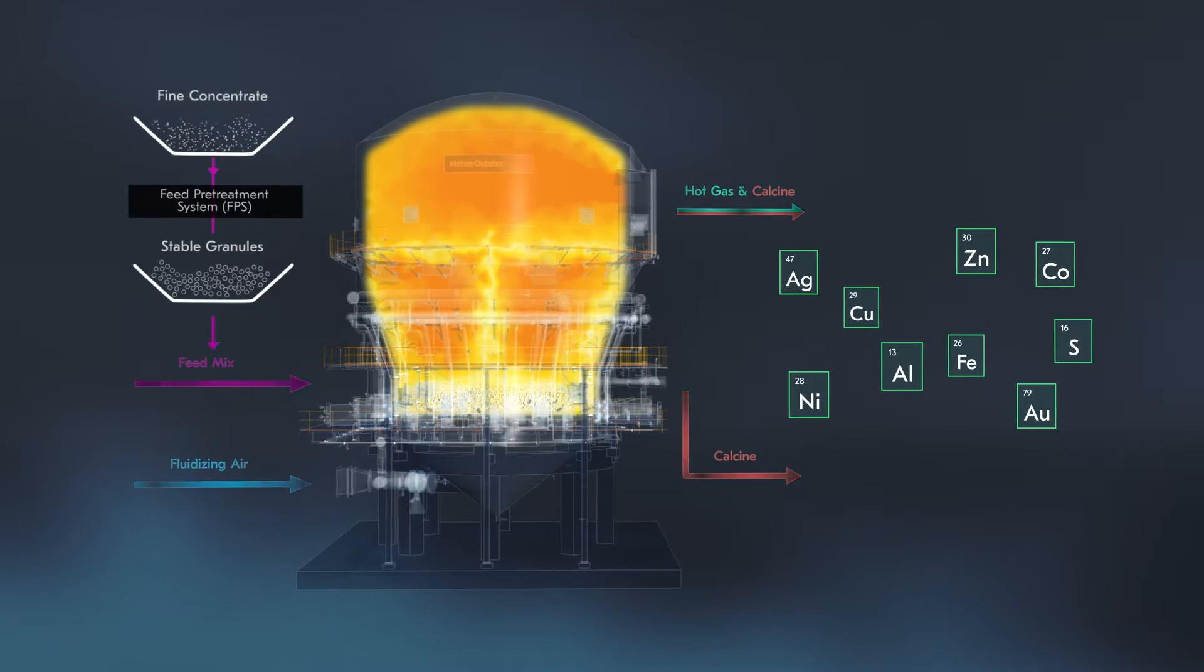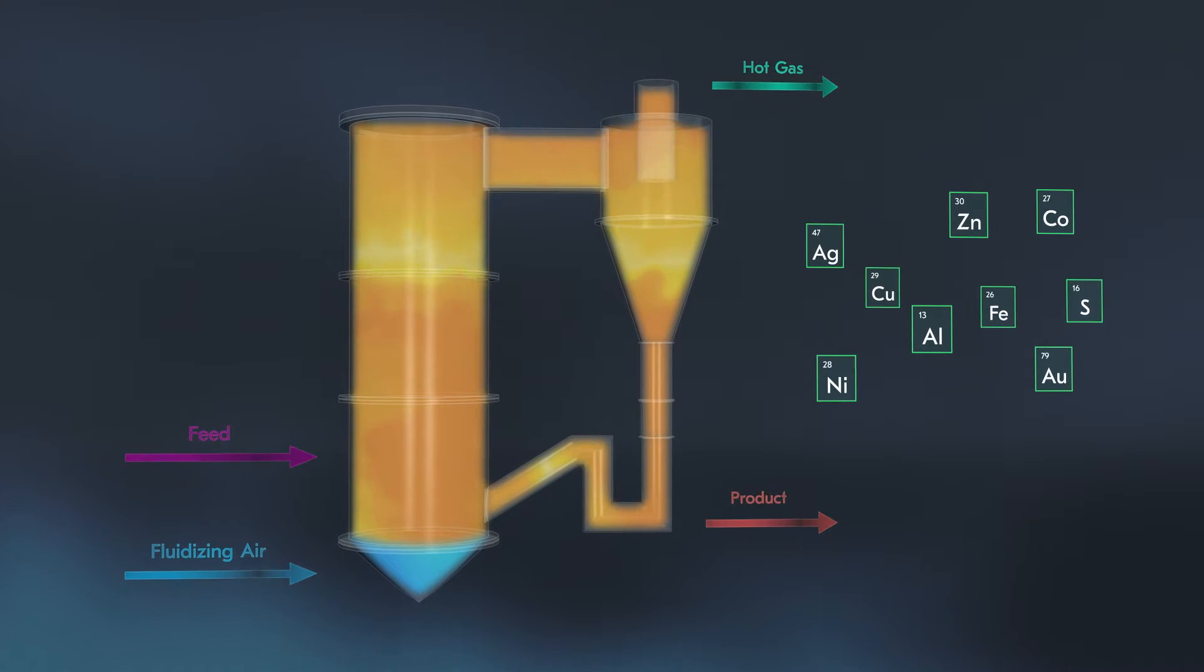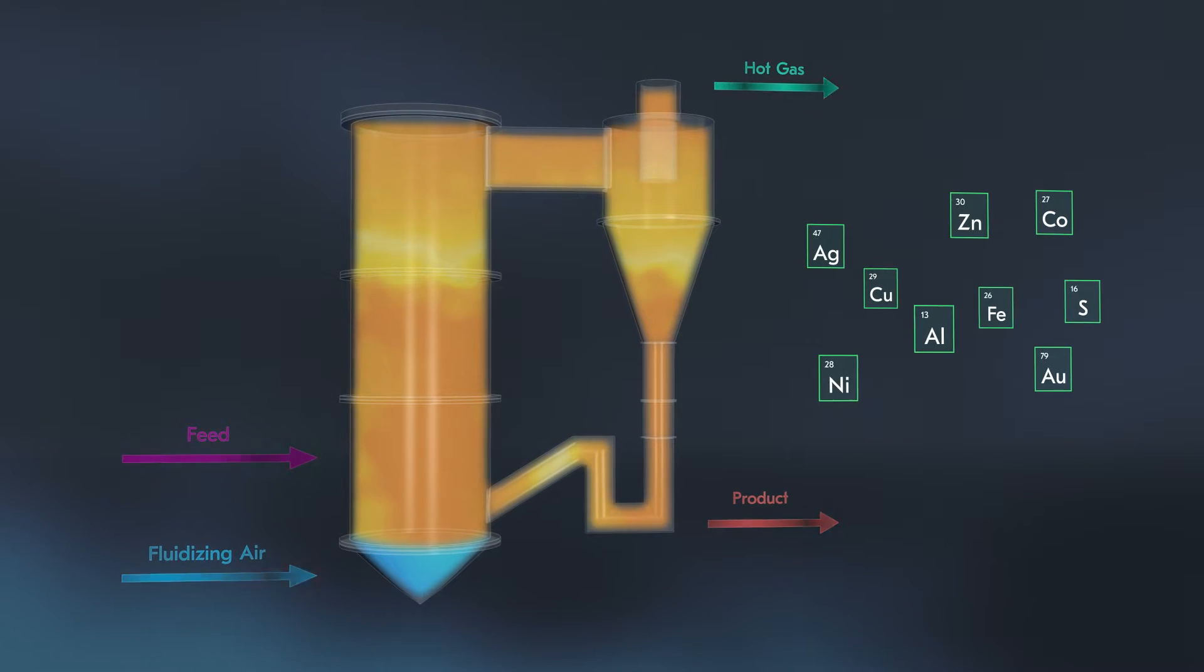Optimizers are used in bubbling fluid bed systems such as zinc and pyrite roasting, as well as circulating fluid bed systems used in gold ore processing and alumina calcination.